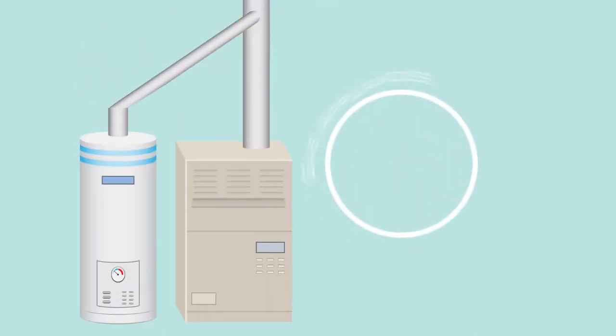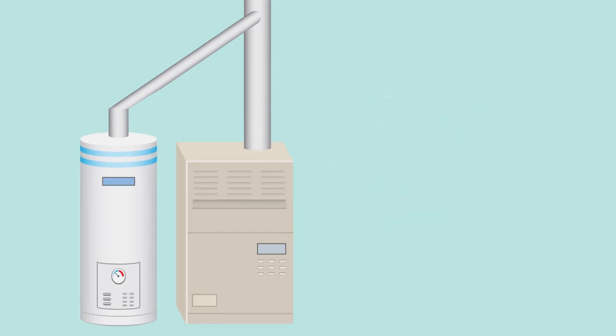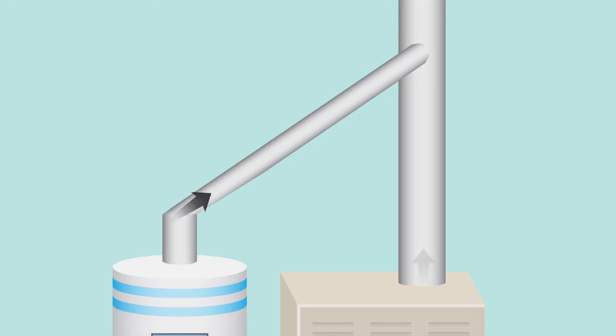Most natural gas appliances are equipped with vents or are connected to a chimney to remove combustion byproducts. This eliminates the buildup of moisture and carbon dioxide in your home.